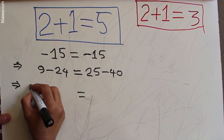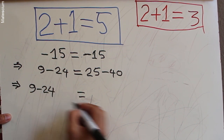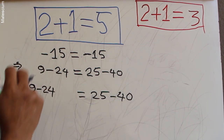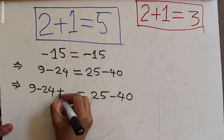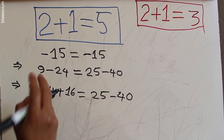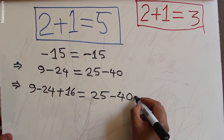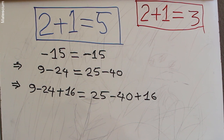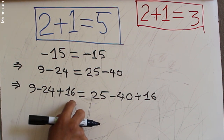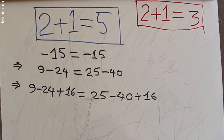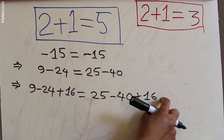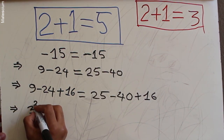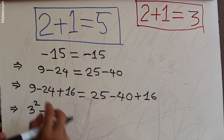Next, I'll rewrite both sides again: 9 minus 24 on the left and 25 minus 40 on the right. I'm adding an extra number — 16 — to both sides to keep it balanced. So we have 9 minus 24 plus 16 on the left, which still equals minus 15, and 25 minus 40 plus 16 on the right, which also equals minus 15.